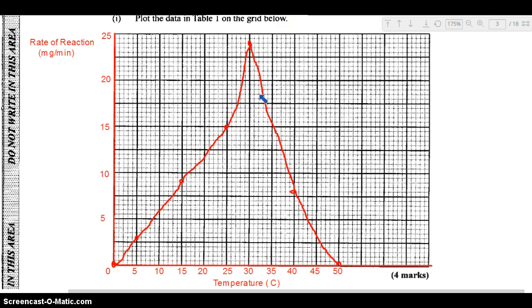We're going to have to plot a graph. The first part of the question asks plot the data in table 1 on this grid below. I have the graph plotted already. You would have your rate of reaction on the y-axis in milligrams per minute. You can see the scale that I've used, and it goes up to 25 because the highest rate of reaction is actually 24. On the x-axis, we have the temperature values from 0 degrees Celsius right up to 50 degrees Celsius. This is how your curve should look, pretty much like a mountain.